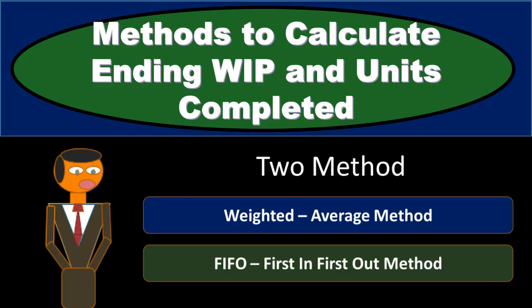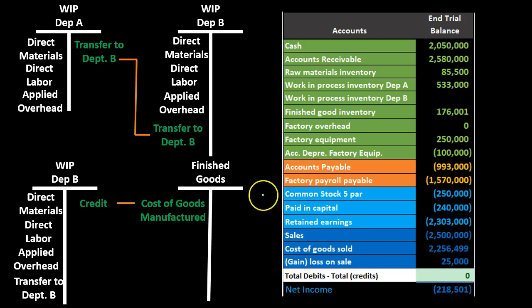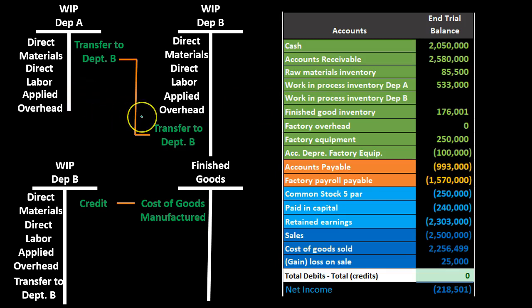In this presentation we will discuss methods to calculate ending work in process and units completed. In a prior presentation we went through the flow of inventory from raw materials to finished goods inventory and then the sale of that inventory as cost of goods sold. We had times when we had to transfer from department A to department B in our process cost system, and from department B to finished goods. The journal entry to transfer from department A to department B would be to credit department A and debit department B, decreasing department A and increasing department B.